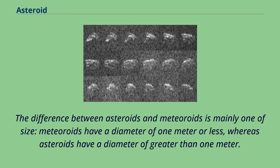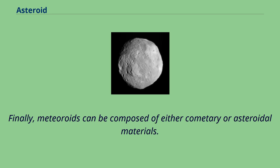The difference between asteroids and meteoroids is mainly one of size: meteoroids have a diameter of 1 meter or less, whereas asteroids have a diameter of greater than 1 meter. Finally, meteoroids can be composed of either cometary or asteroidal materials.